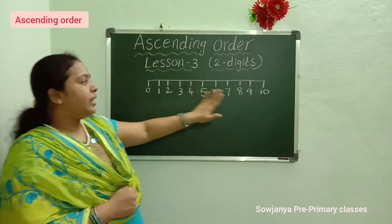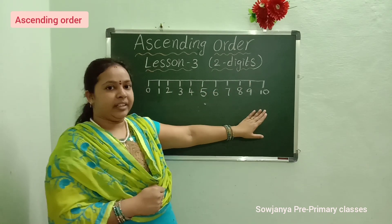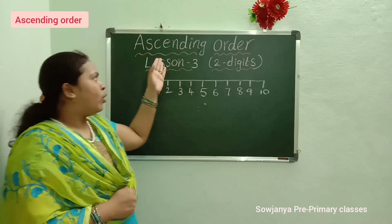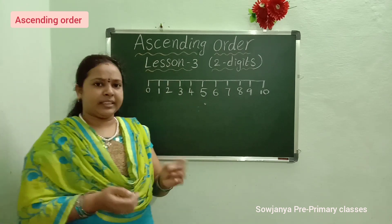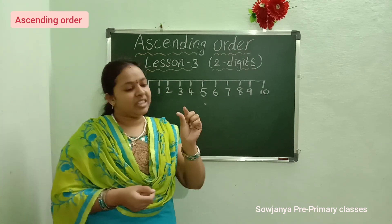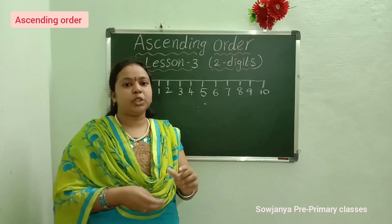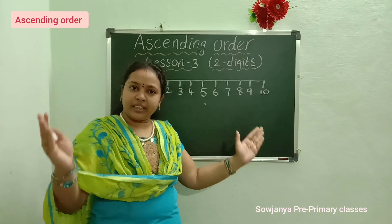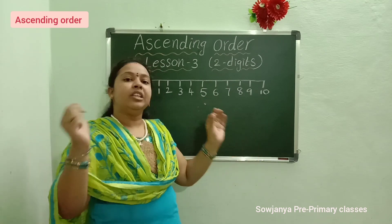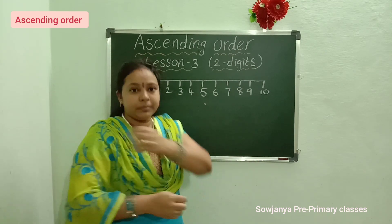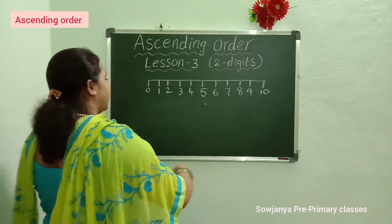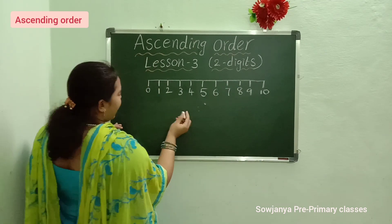Already I have drawn the number line. What is the meaning of ascending order? Ascending order means small number to big number. Now we solve the problem. Let's start.